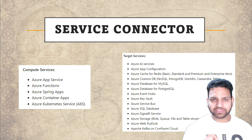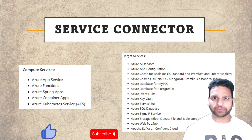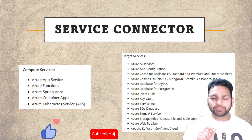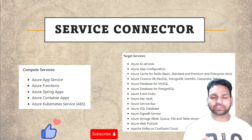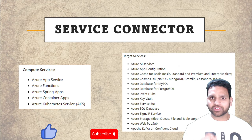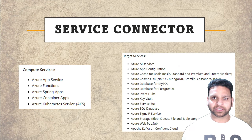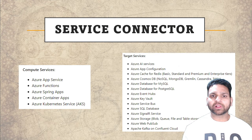Once the Service Connector is created, it takes care of the network configuration as well as the authentication. So the Compute Services don't need to authenticate again to connect to the target service. Once it's set up, you just need to make changes in an application to use the environment variables of the Service Connector and all the connections will work smoothly.